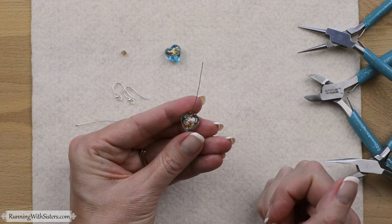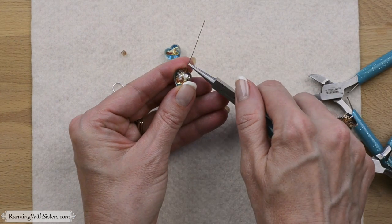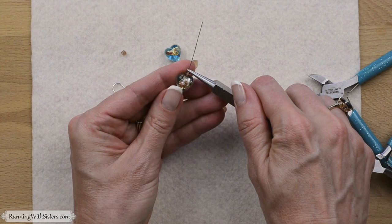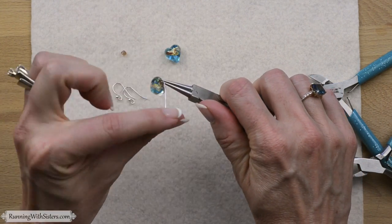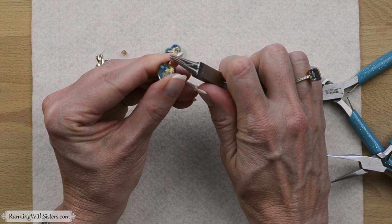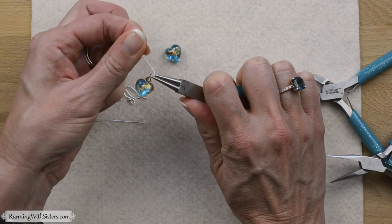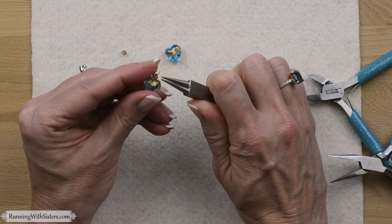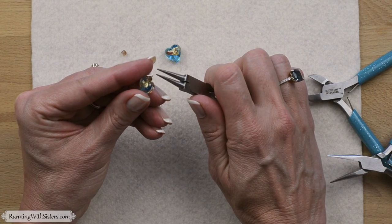Now we need a wrapped loop. To make a wrapped loop, I'm going to use my round nose pliers. I'm going to grab the wire of the head pin right above the bicone and make a 90 degree angle. Then I'm going to reposition the pliers so that I'm in the top part of that 90 degree angle and pull the wire around the top jaw. She's letting the round shape of the pliers create the round shape on the wire.